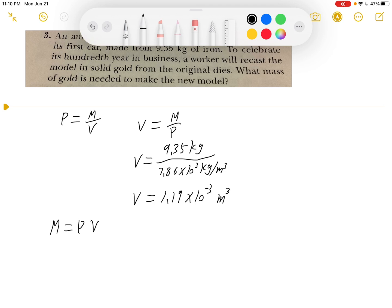So the density of the gold is 19.3 times 10 to the 3rd power kg per cubic meter. And the volume of the model is 1.19 times 10 to the negative 3rd power.